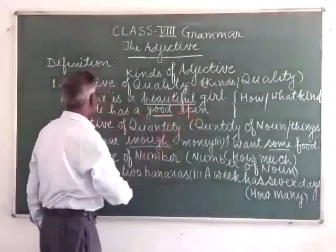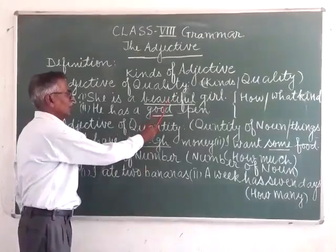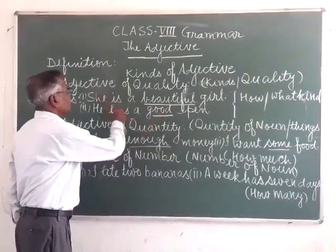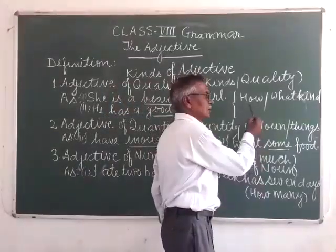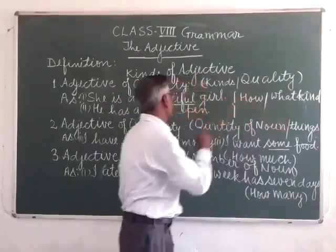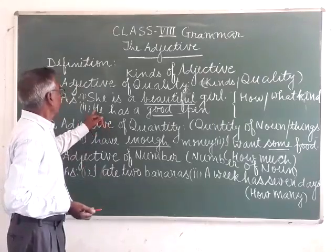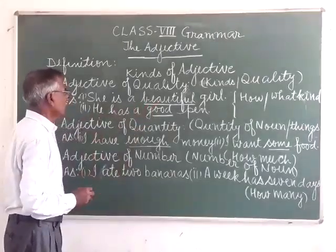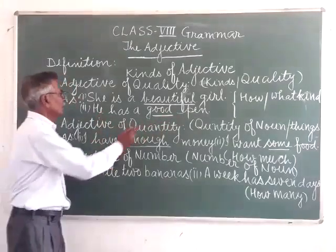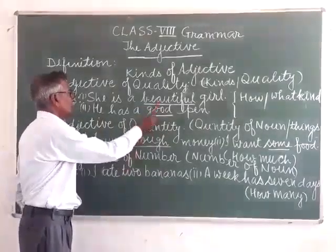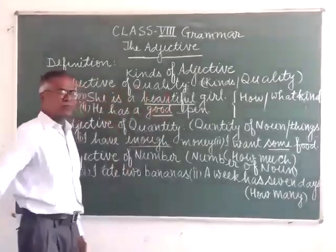For example: 'She is a good girl' and 'He has a beautiful house.' Here the underlined words good and beautiful are known as adjectives of quality. To find out the adjective of quality, we use 'how' or 'what kind.' If you ask 'What kind of girl is she?', the answer will be beautiful or good. So the words beautiful and good are considered as adjectives of quality.